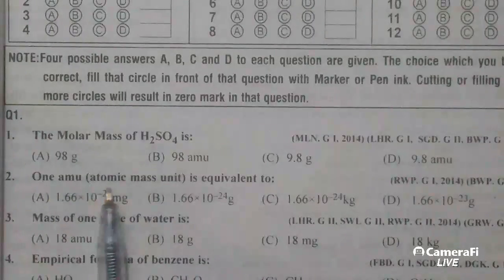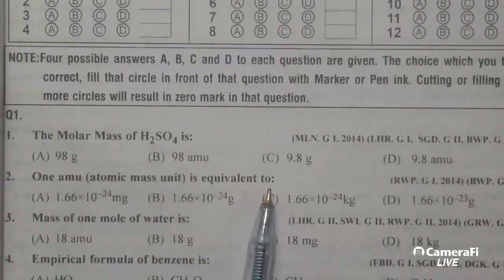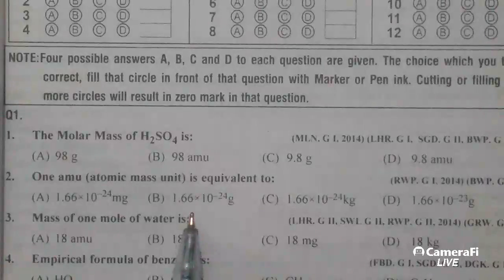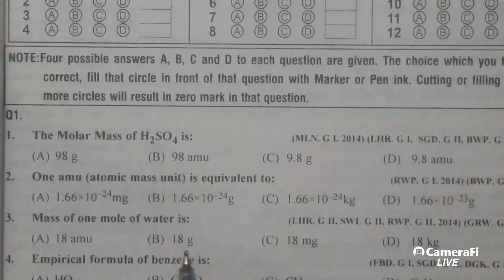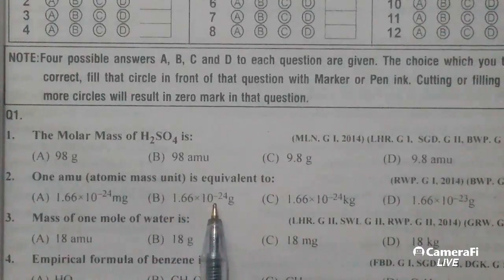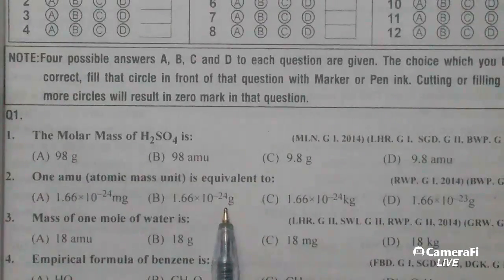One AMU, one atomic mass unit is equivalent to. An atomic mass unit is equal to 1.6 multiplied by 10 to the power minus 24 grams.